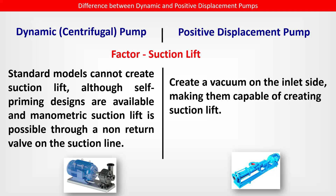Difference between both pumps — factor: suction lift. In the centrifugal pump, standard models cannot create suction lift, although self-priming designs are available. A manometric suction lift is possible through a non-return valve on the suction line, creating a vacuum on the inlet side, making them capable of creating suction lift. In the positive displacement pump, suction lift is handled more readily.